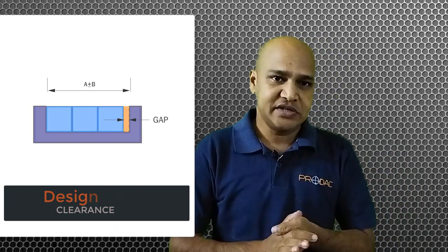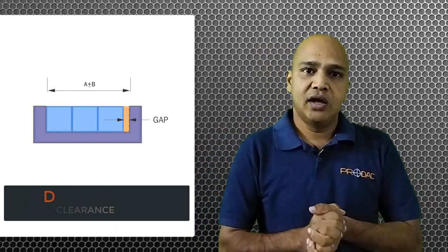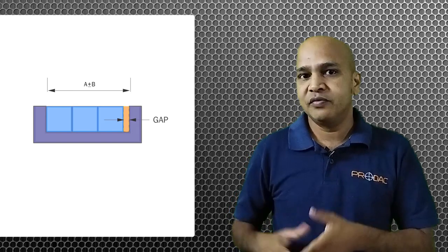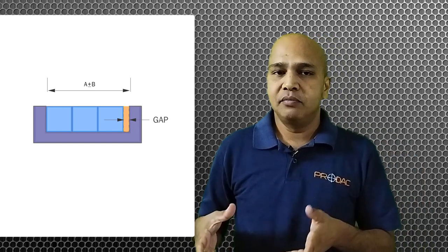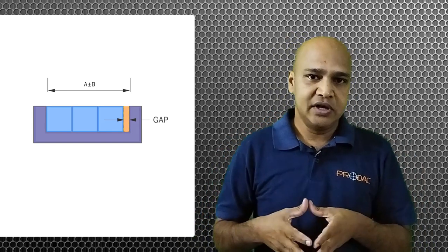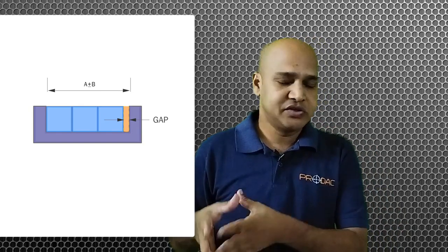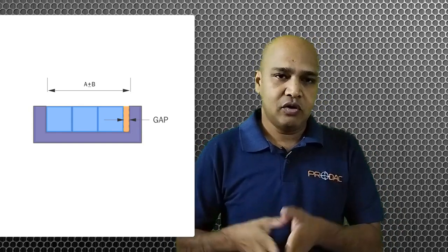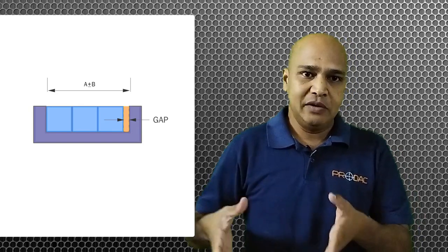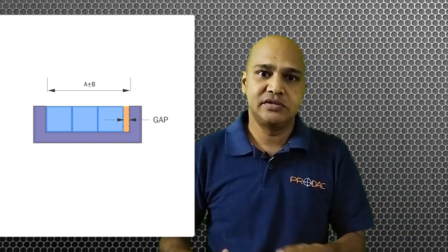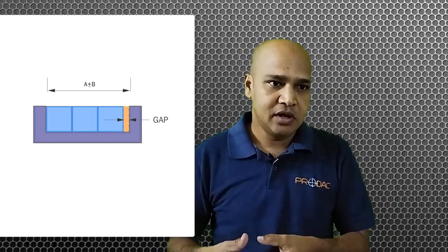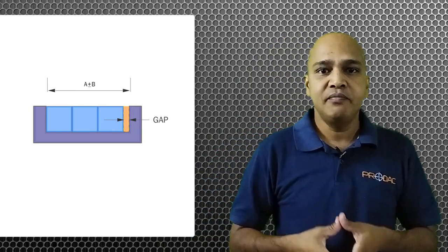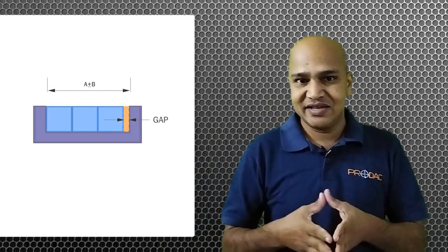For instance, if we assume that we are calculating the tolerance of this entire assembly based on the RSS methodology and we derive the tolerances based on that, now all those tolerances will satisfy the design goal which is to have clearance. But at the same time, since these tolerances are statistical tolerances, these assemblies will meet the design goal.